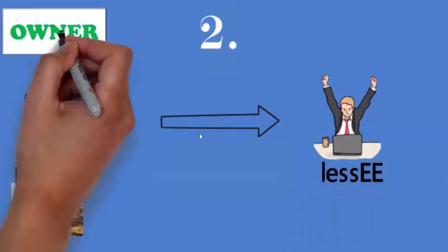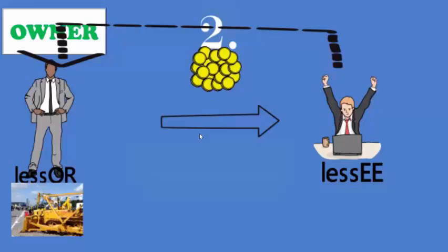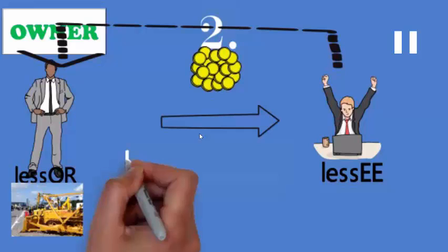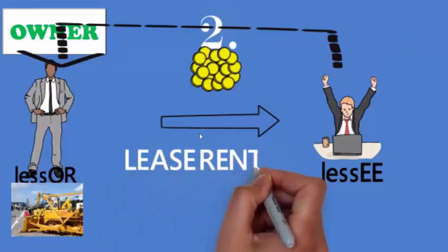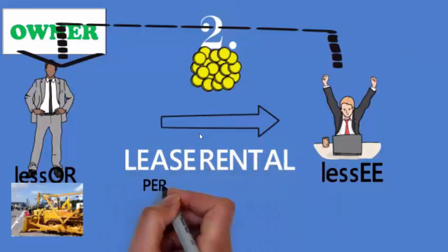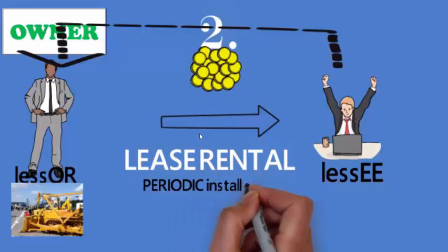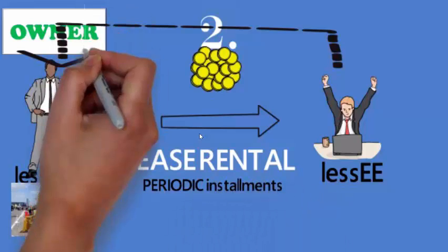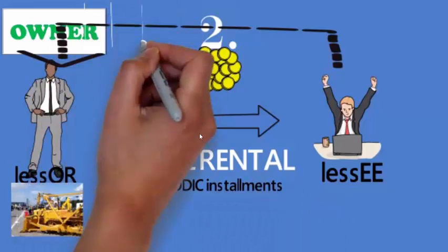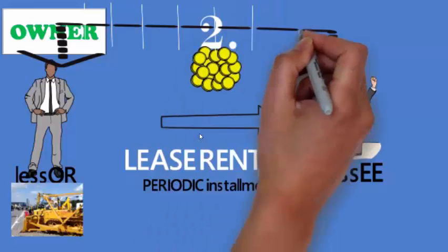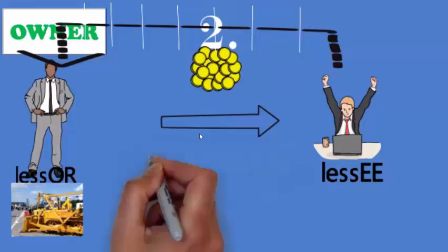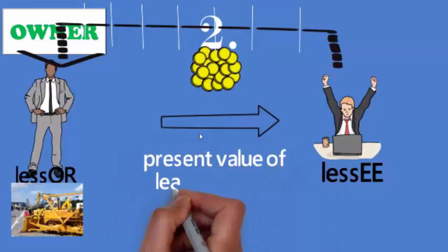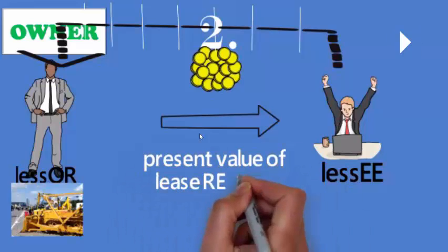What will the lessee give him in return? That is the periodic installments — the money. So the second factor he is going to consider is the present value of lease rental.